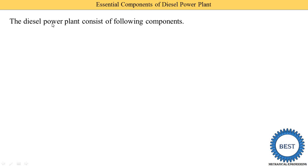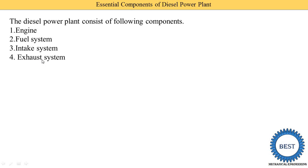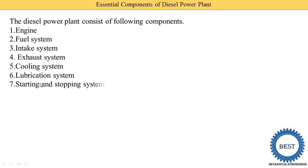The diesel power plant consists of the following components: first is the engine, second is the fuel supply system, third is the intake system, fourth is the exhaust system, fifth is the cooling system, sixth is the lubrication system, seventh is the starting and stopping system, eighth is the governing system, and ninth is the generator.